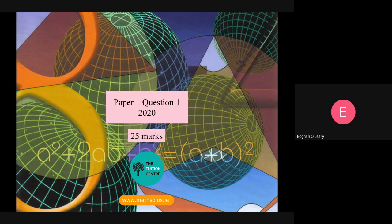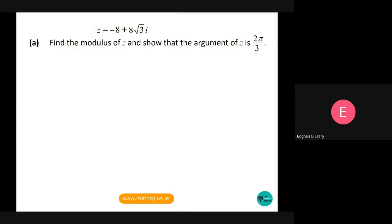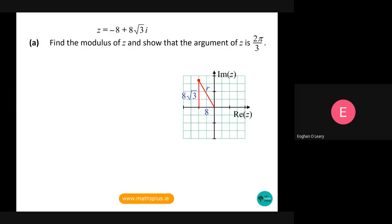Andrea and I are going to start here and go through the solutions and the marks given for each of the questions. Here is question one — it was a complex number question: find the modulus of z and show that the argument of z is 2π/3, when z is equal to minus 8 plus 8√3 i.